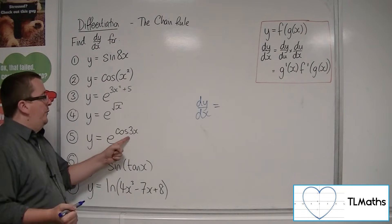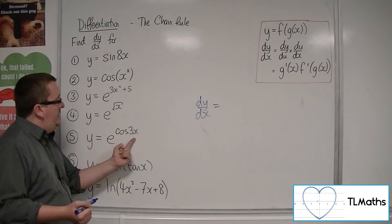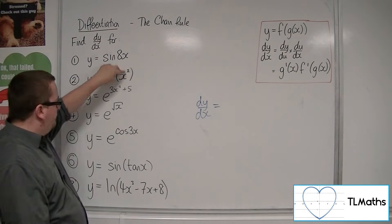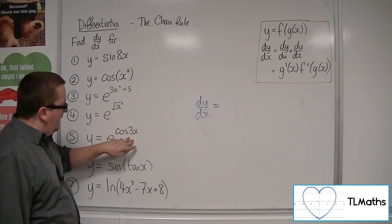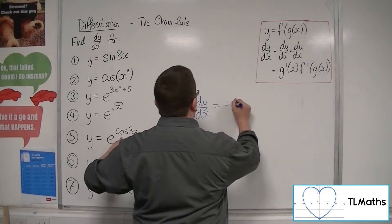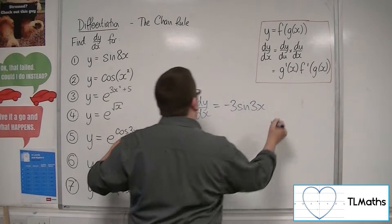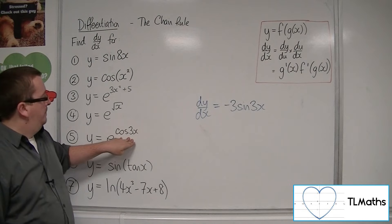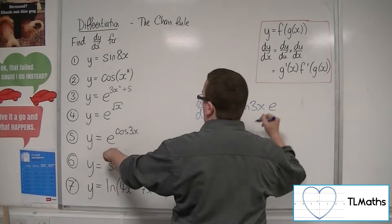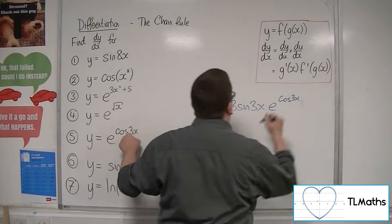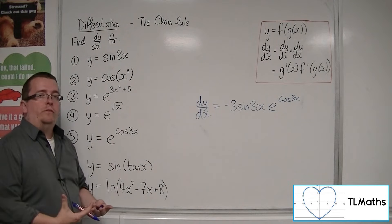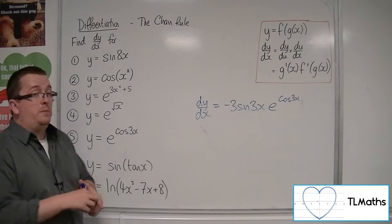y equals e to the cosine of 3x. The derivative of what's inside comes outside — cosine of 3x differentiates to minus 3 sine of 3x. e to the u differentiates to e to the u, so it's e to the cosine of 3x. The answer is minus 3 sine of 3x times e to the cosine of 3x. That's number five.